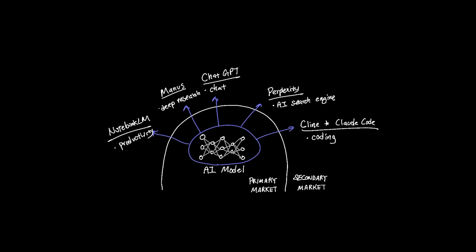And essentially, the trick here is to use the underlying model that's upstream in the primary market to encapsulate the model to an agent downstream in the secondary market and reach a wider user base that exists in the secondary market.